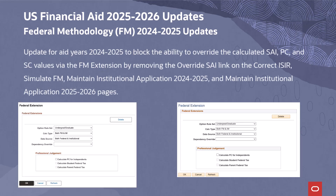An update has been delivered for Aid Years 2024-2025 and forward to block the ability to override the calculated SAI, PC, and SC values via the FM extension, by removing the Override SAI link on the Correct ISA, Simulate FM, Maintain Institutional Application 2024-2025, and Maintain Institutional Application 2025-2026 pages.